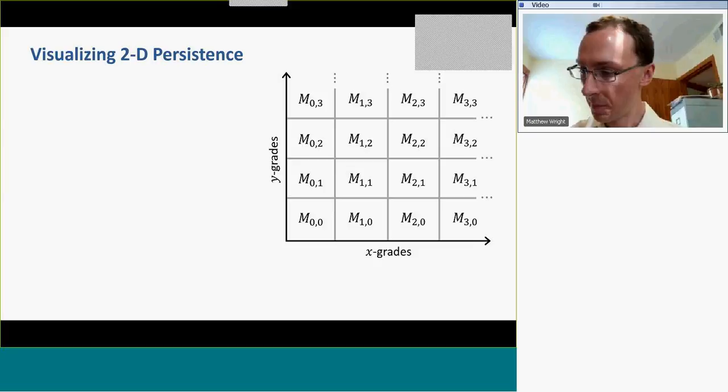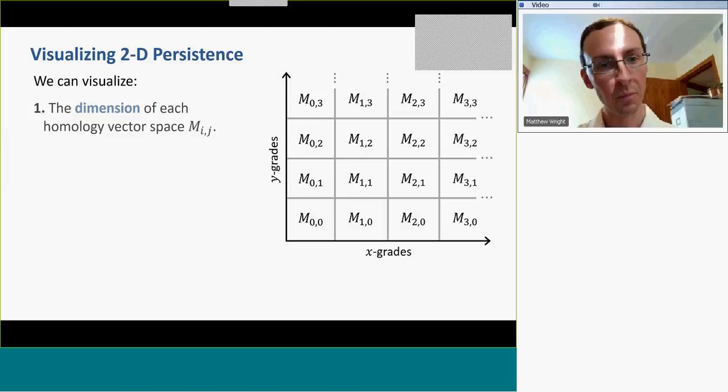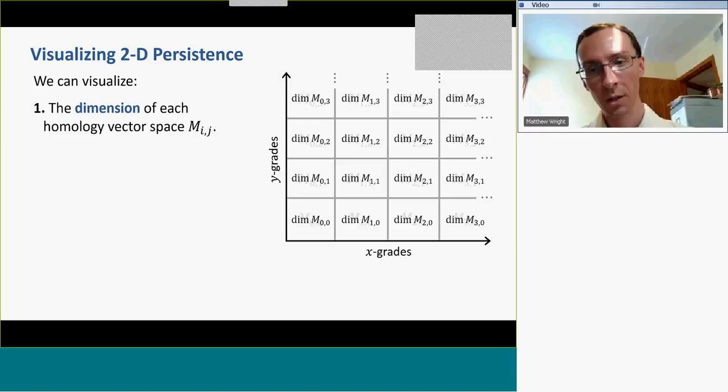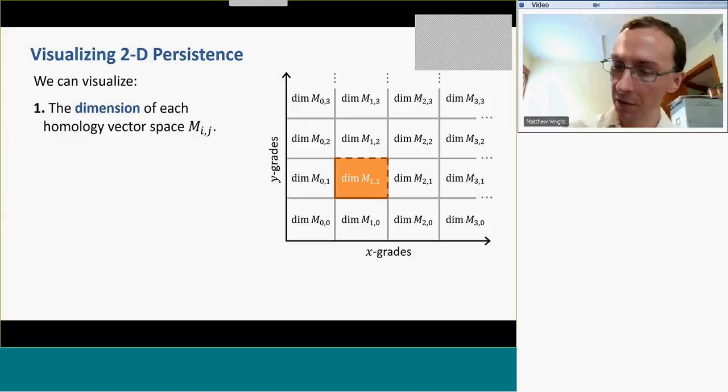So we're going to visualize a two-dimensional persistence module by examining the barcode along all lines of non-negative slope through the module. We're going to visualize three different invariants of a two-dimensional persistence module. First, we're going to visualize the dimension of each homology vector space M_{i,j}. Each vector space at a point in the plane has some dimension. Instead of the vector space itself, we could just look at the dimension. And then the dimension within a box leads us to find some kind of color scheme for visualizing the dimension as an image.